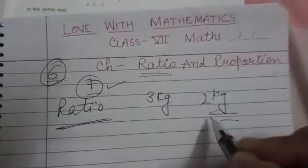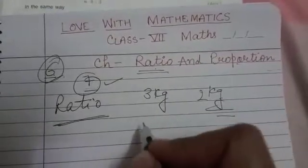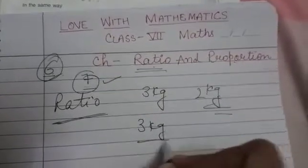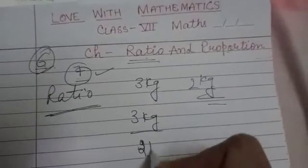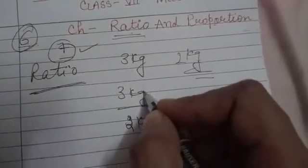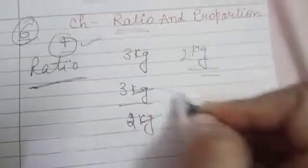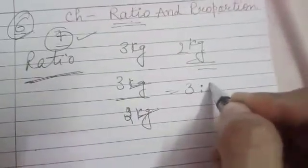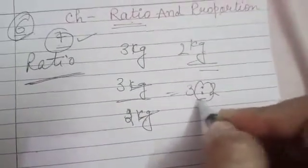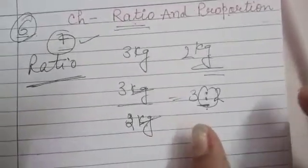It can be 2 kg. So how will I find the ratio? I will divide these two quantities. Same unit, and I'm finding the relation between them. The same units can be cancelled with each other, and we can write it 3 ratio 2. This is the symbol of how we show the ratio.